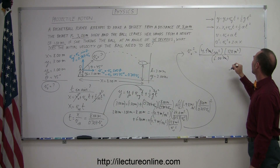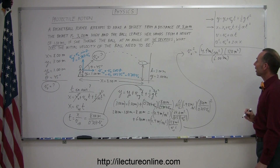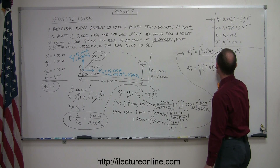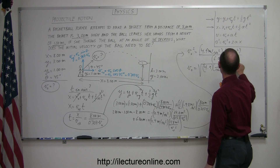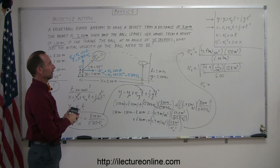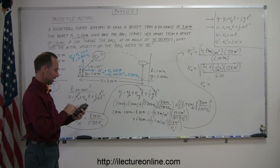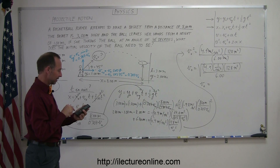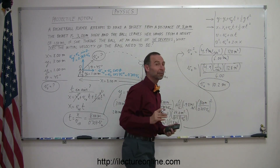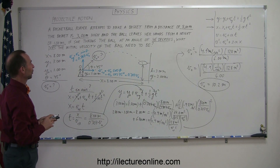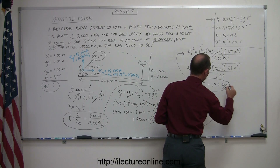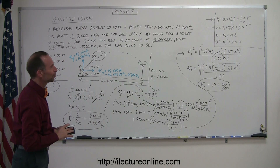V initial equals the square root of 4.9 times 128 divided by 6.00. Let me grab my calculator: 128 times 4.9 divided by 6, take the square root, and I get 10.22 meters per second, so v initial equals 10.2 meters per second. That should be the initial velocity of the basketball if she has any aspirations to hit that basket. And yes — I almost forgot the units. Velocity in terms of meters alone wouldn't be very good — it's 10.2 meters per second.